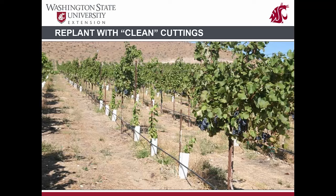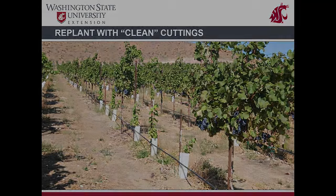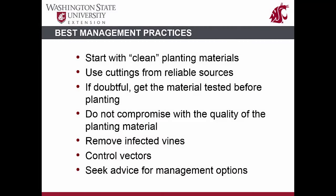The next step is to replant with virus-tested cuttings. A grower can remove infected vines and replant with cuttings of the same variety or clone obtained from a certified nursery. In a few years, they will grow and produce grapes along with other vines in the block. It is critical to remember that grapevine virus diseases can be effectively managed by prevention.